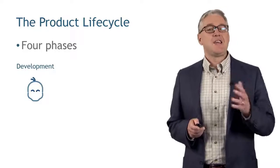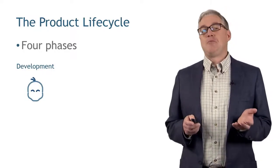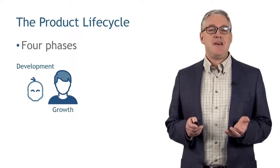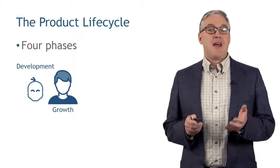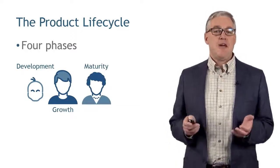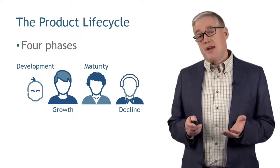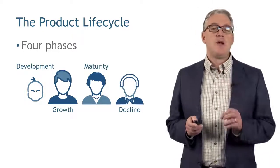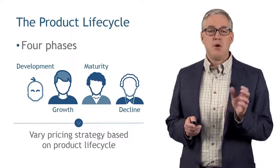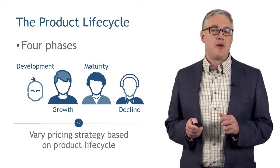I like to think about it as a graph, but you can also think about it as a human being if that helps your memory. The development phase is like a baby. The growth phase is like that adolescent — that 14-year-old who's got the growth spurt. The maturity phase is like a mature adult. And finally, decline is like an elderly person. We're going to vary our pricing strategies depending on which one of these phases we're looking at.